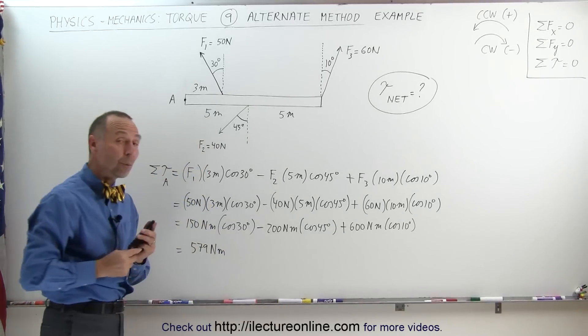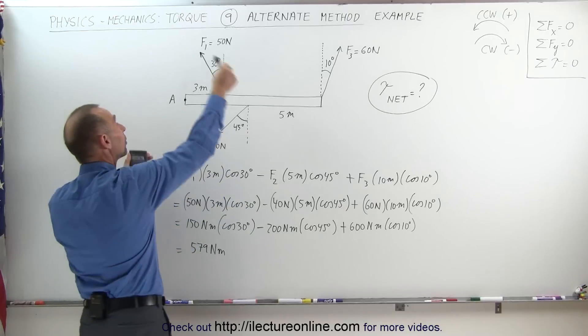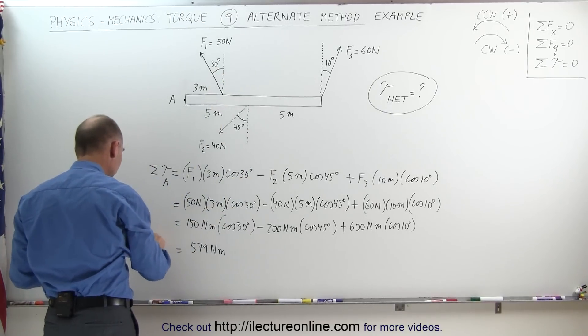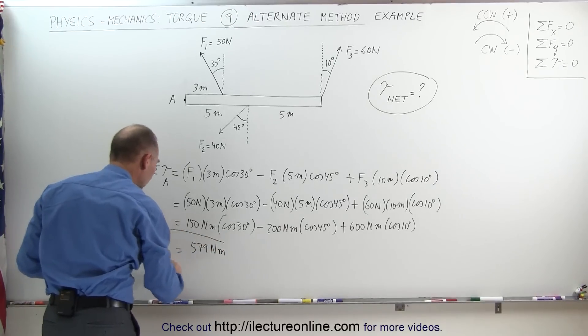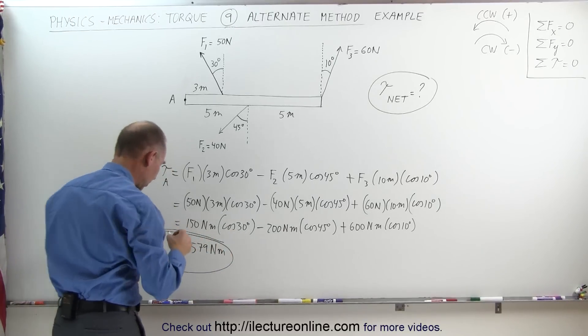It being a positive quantity means that would be a counterclockwise direction, and so that would be the sum of all the torques about point A, which is also then known as the net torque on point A.